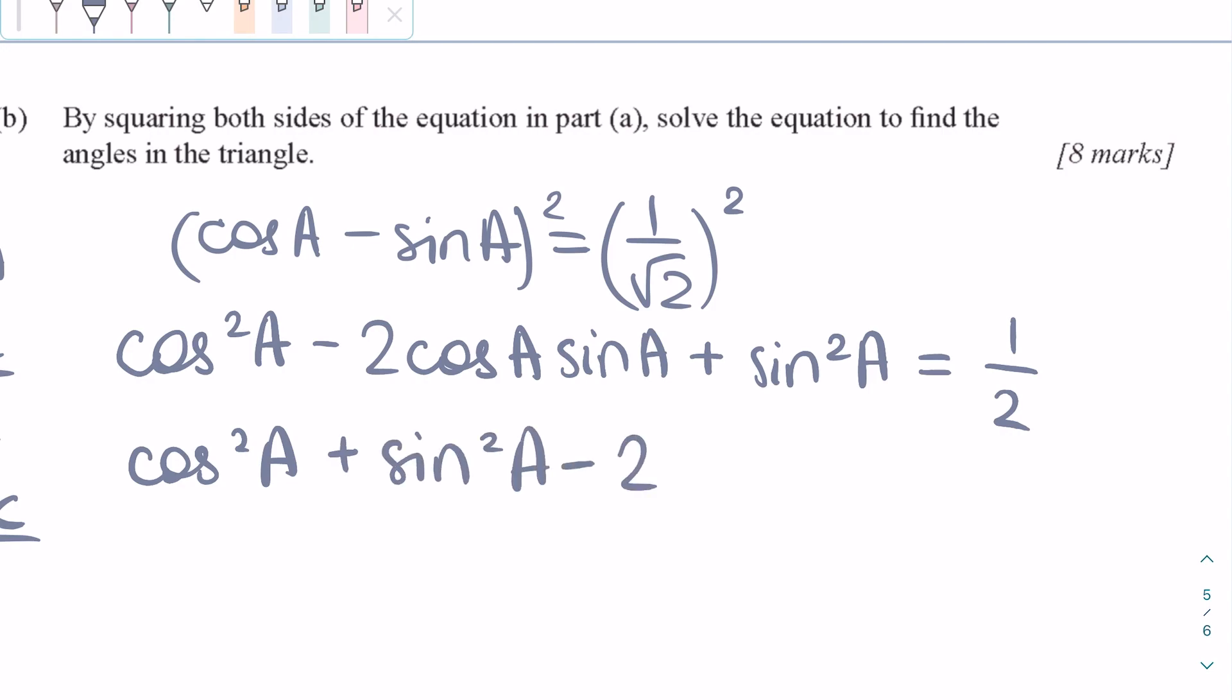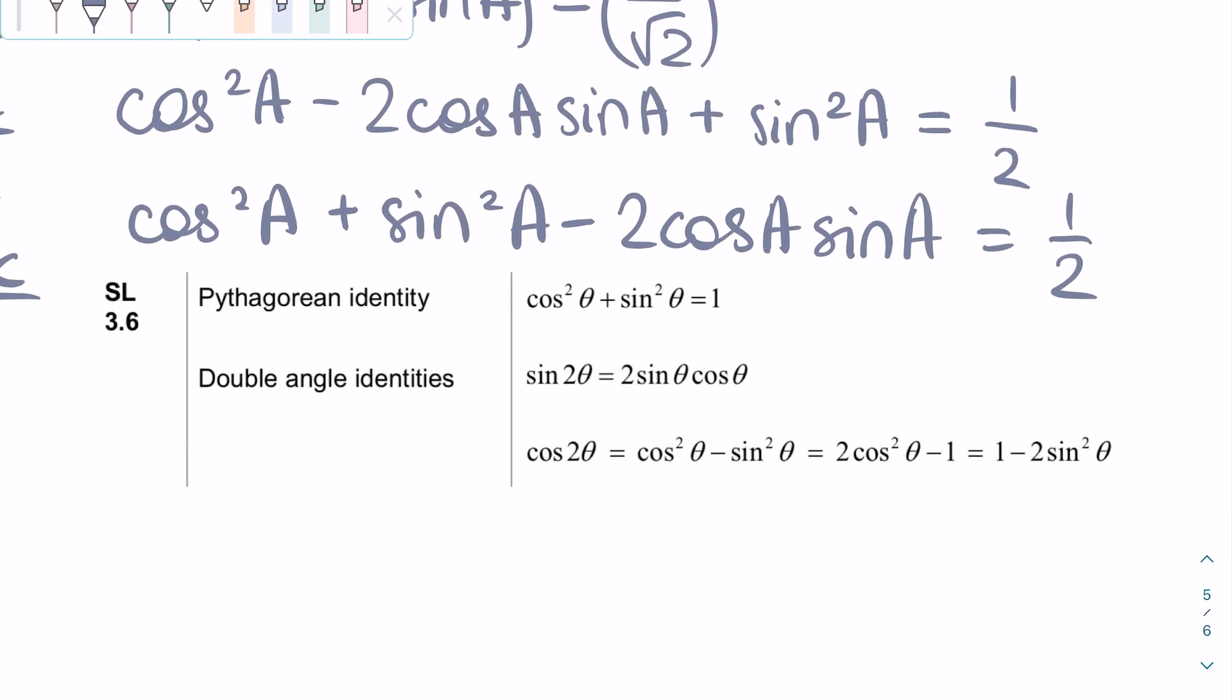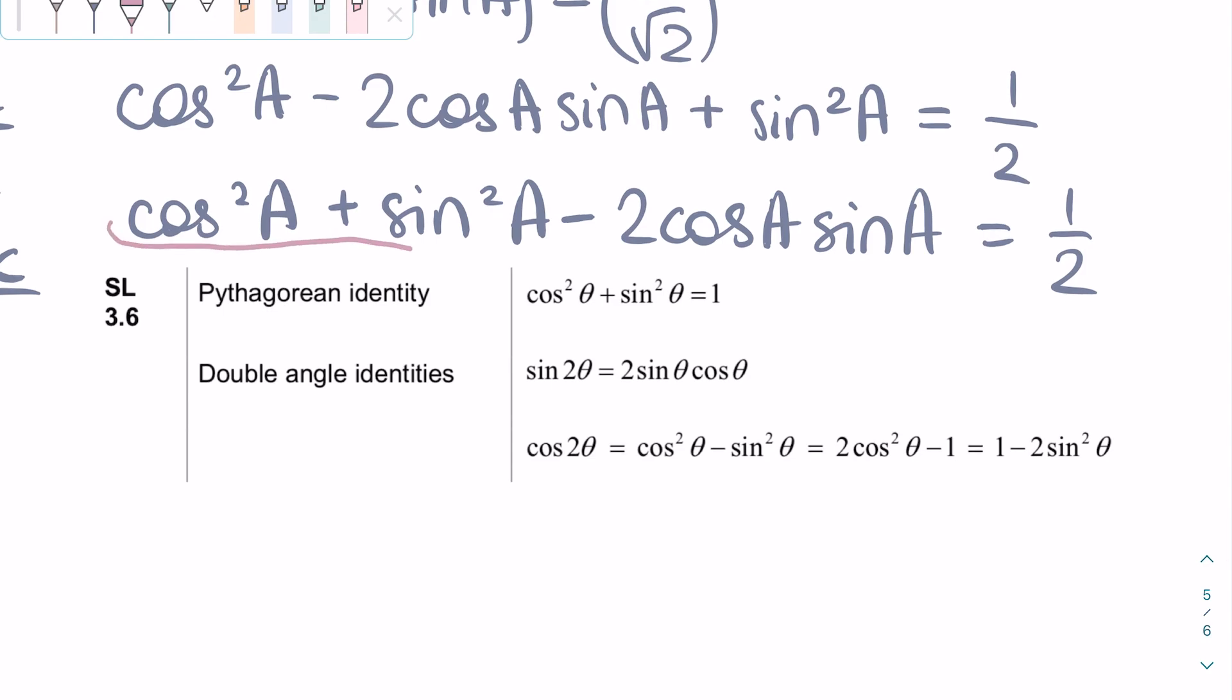If we rearrange the left side of the equation, we actually get something interesting, since cosine squared A plus sine squared A, as seen in the formula booklet, is actually equal to 1, as this is a Pythagorean identity.